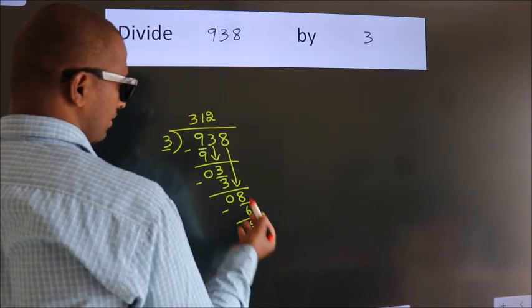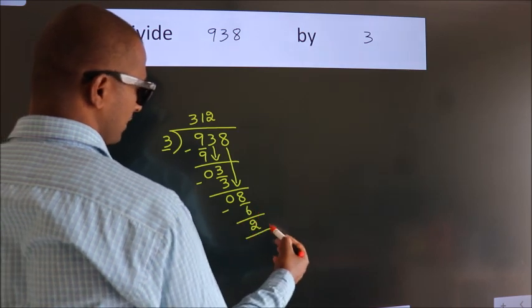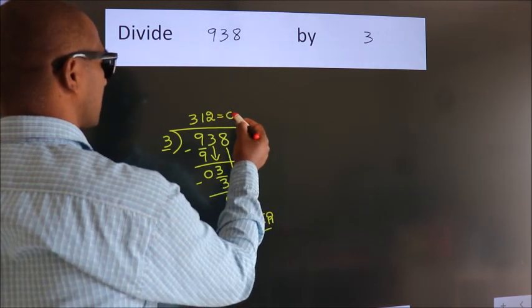After this, no more numbers to bring down. So we stop here. This is our remainder. This is our quotient.